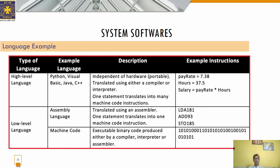Programs written in high level programming languages like Java and C++ are called source code. A set of instructions in machine-readable form is called object code or machine code. System software that converts source code to machine code is called a language processor. There are three types of language processors. The first is the assembler — a system program used for translating an assembly language program into machine-understandable code. Examples include macro assembler and turbo assembler.